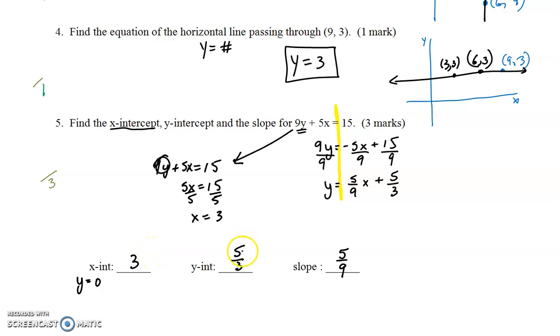Incidentally, you could have found the y-intercept the same way, by making x = 0. And then you would have got 9y + 5x = 15, and that would become 0, so you would be solving 9y = 15, and you'd have to divide both sides. And you would still come up with 5/3 for your y-intercept.